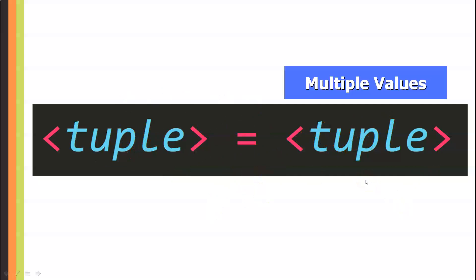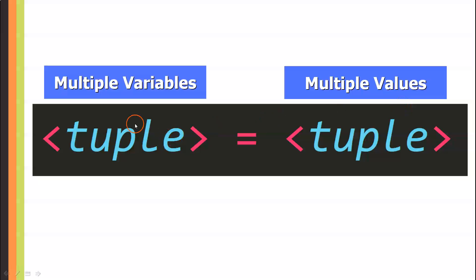We are assigning a tuple to another tuple. The tuple on the right is going to have multiple values, and the tuple on the left is going to have multiple variables — that is the key difference between these two tuples. We are going to assign these values from the right tuple to the variables in the left tuple individually.